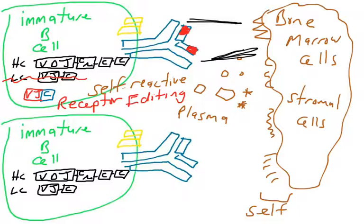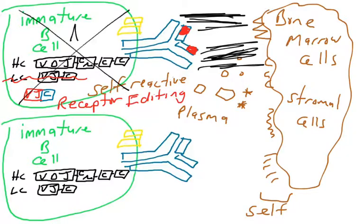Will it interact? Will it have affinity? Well, it's possible it still has affinity. Maybe it was really in the heavy chain where you had a really strong binding to some self molecule. What do you do with this B cell? You get rid of it. It triggers death via apoptosis.